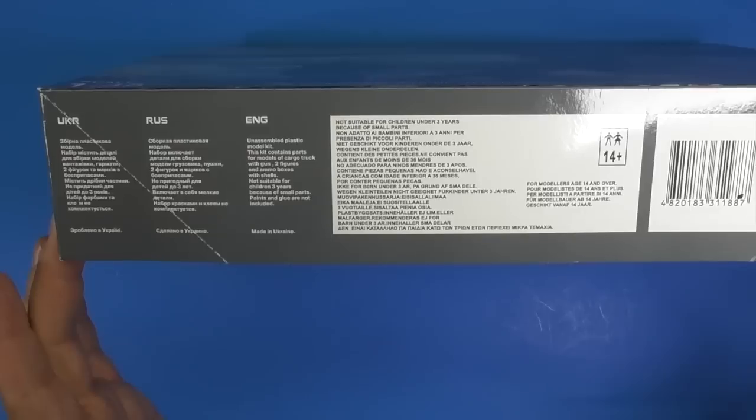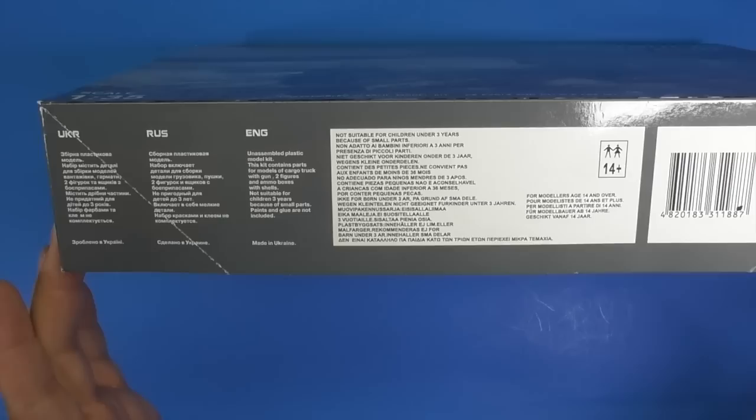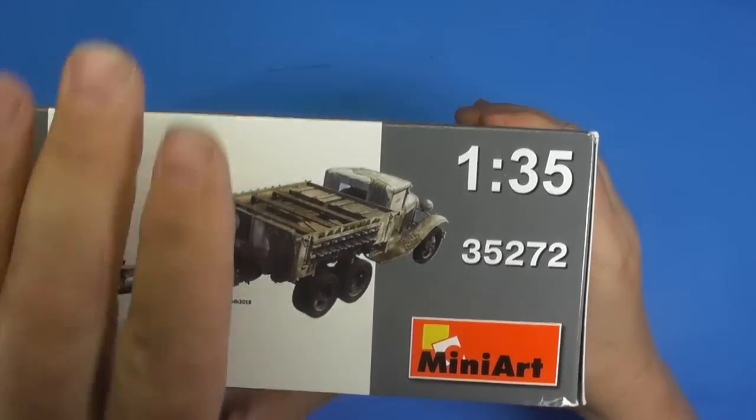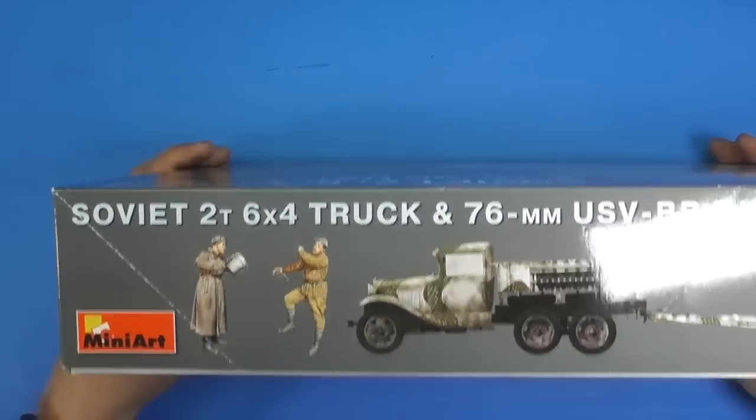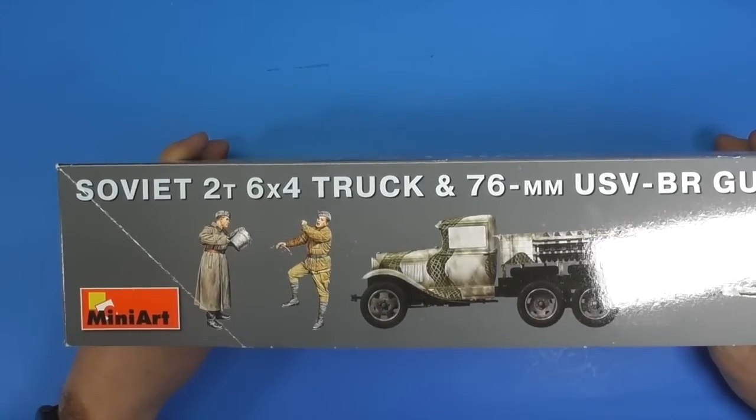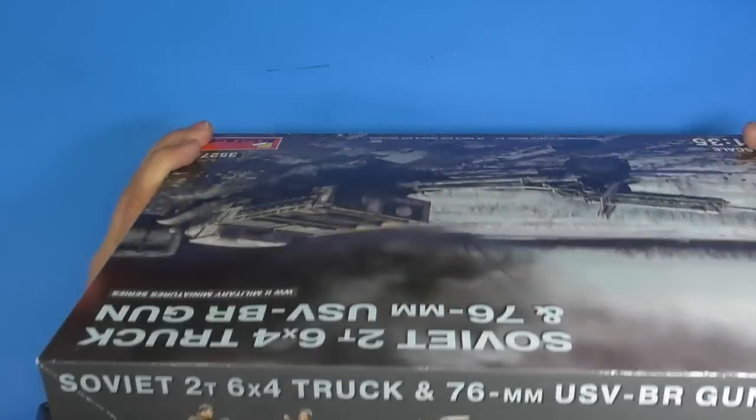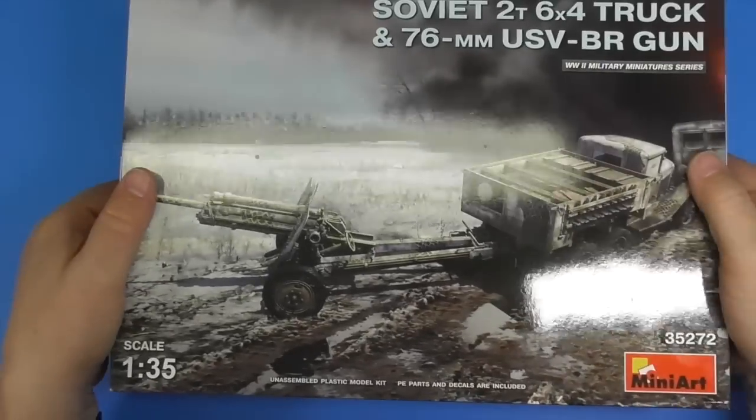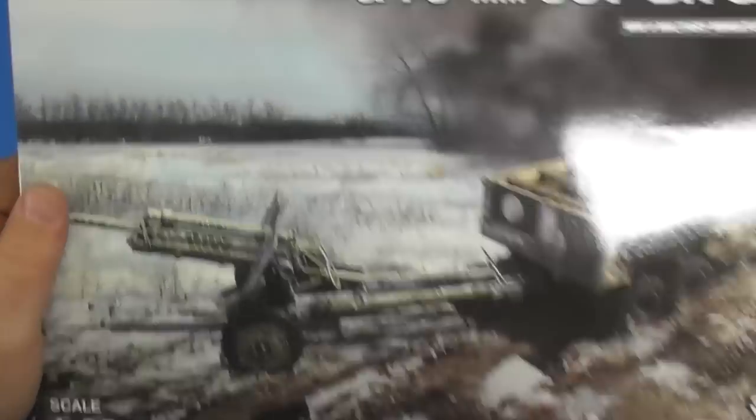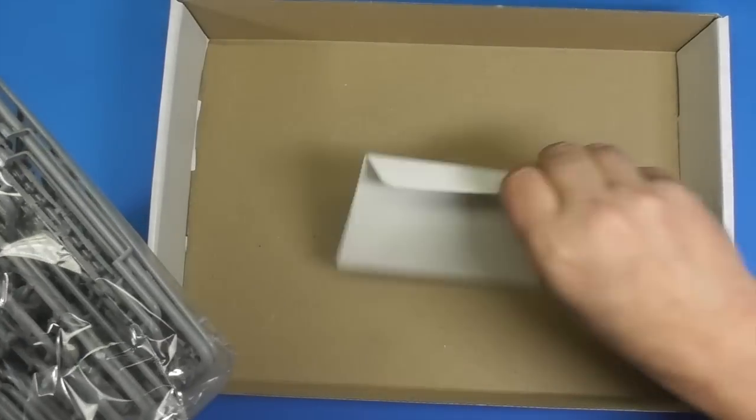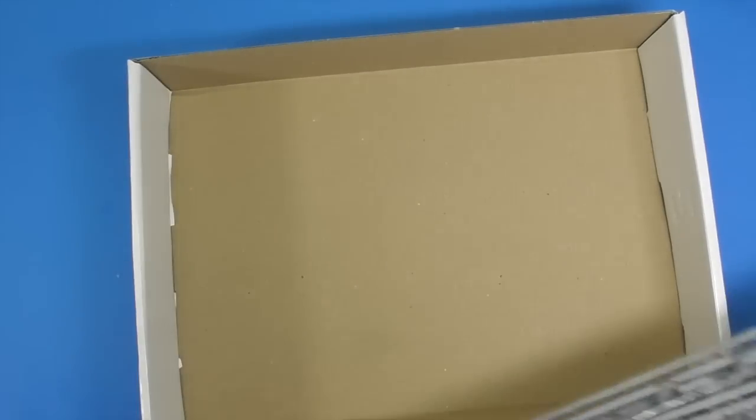Warnings in English, Russian, and Ukrainian. Kit number 35272. I'm pretty sure it comes with the guy with the bucket, the guy climbing on the back of the truck. It does come with the truck and the gun. Pretty heavy box. And one bag tightly packed with sprues. Instructions, little envelope. Empty box.